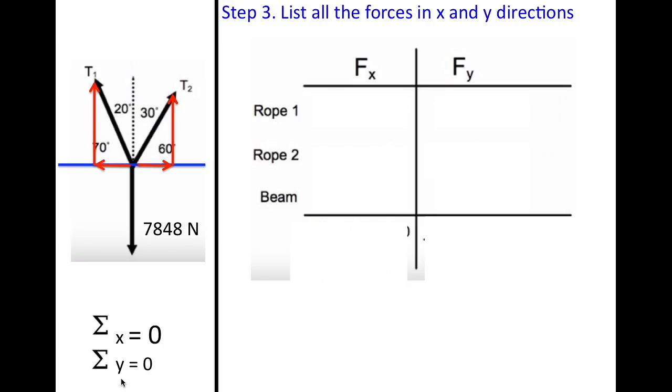Step three is to list all the forces in the x and the y directions. So here we have our three objects of interest. We have rope one, two, and the beam. To figure out the x and the y components, you're just going to do your normal sine and cosines of whatever angle you are trying to figure out. So here we have 70 degrees. So for rope one, for the x portion, we are going to have a negative t1 cosine of 70. And remember that cosine is just the adjacent over the hypotenuse, and then when you rearrange it, then you get this.